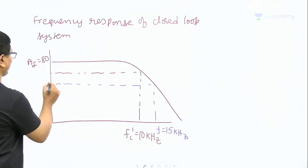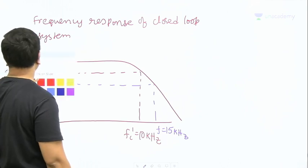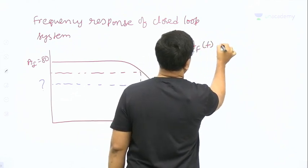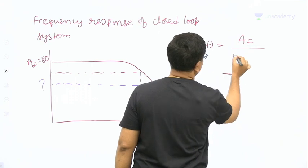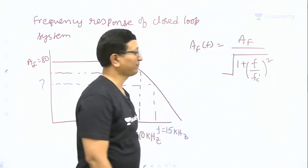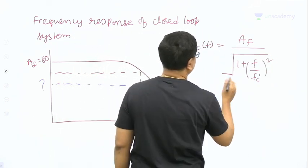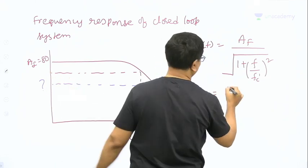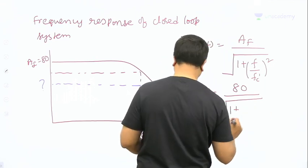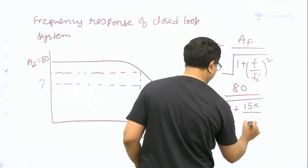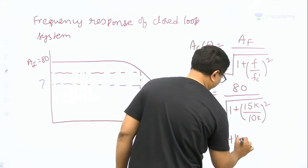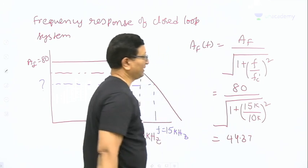What is the gain at 15 kHz? The closed-loop system's gain is given by AF / sqrt(1 + (f/fc')²). Now the value of AF is 80 / sqrt(1 + (15kHz/10kHz)²). If you solve it, you will get around 44.37. That is your answer.